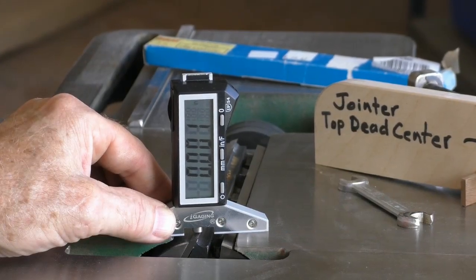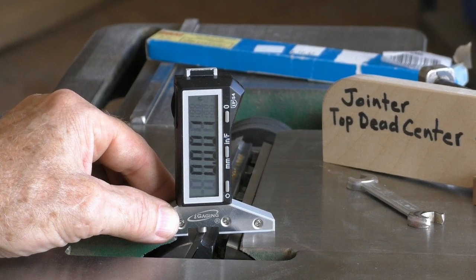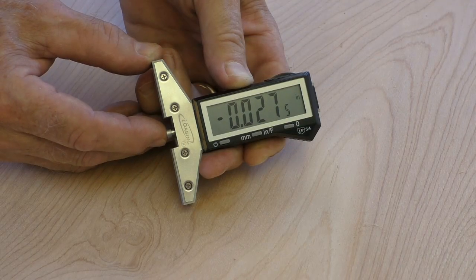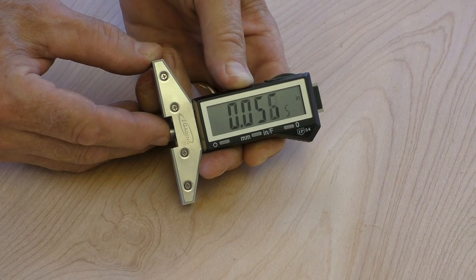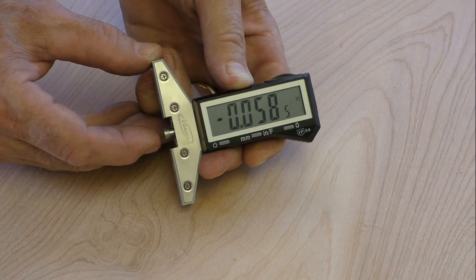PlaneCheck features rugged construction and reliable electronics. Its large readout window can be set for measurements in thousandths of an inch, hundredths of a millimeter, or fractions. The precision plunger signals the reading. Strong magnets hold PlaneCheck in place so you can make adjustments using both hands.